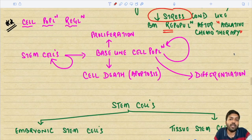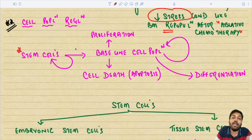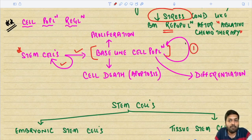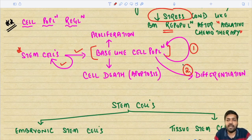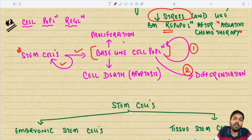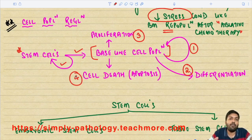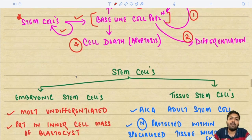In normal adult cells, stem cells undergo asymmetric division: some self-renew and some daughter cells form the baseline cell population. This baseline population can either self-renew to maintain numbers, go toward differentiation — for example basal cells in stratified squamous epithelium progressing toward flat surface cells — proliferate directly, or undergo programmed cell death (apoptosis). This is how cell population is regulated in normal tissues.